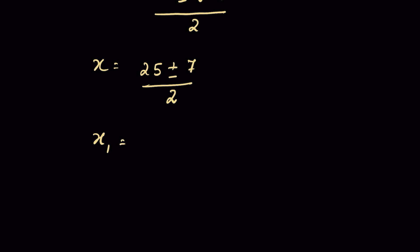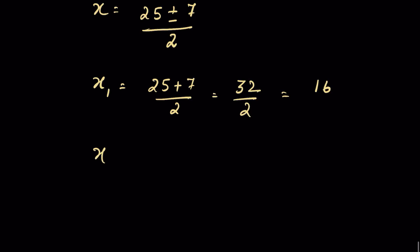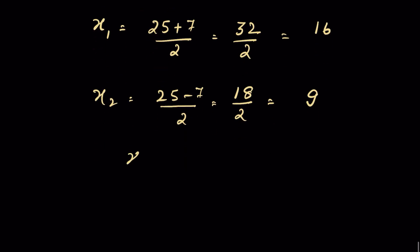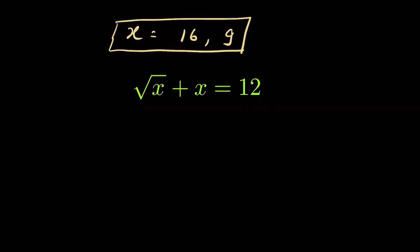This gives two values for x. When x equals (25 plus 7) upon 2, that is 32 upon 2, which equals 16. When x equals (25 minus 7) upon 2, that is 18 upon 2, which equals 9. So the two candidate values are x equals 16 and x equals 9.